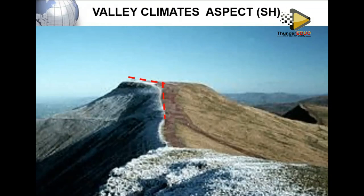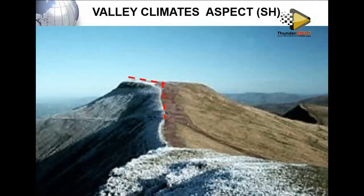When we look at slope aspect, we are looking at the direction in which the slope is facing in relation to the sun. That is what we refer to as slope aspect — the direction in which the slope is facing the sun. So if you are in the southern hemisphere, what happens?